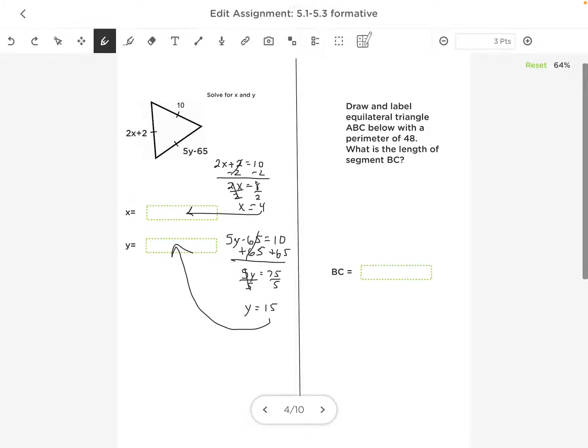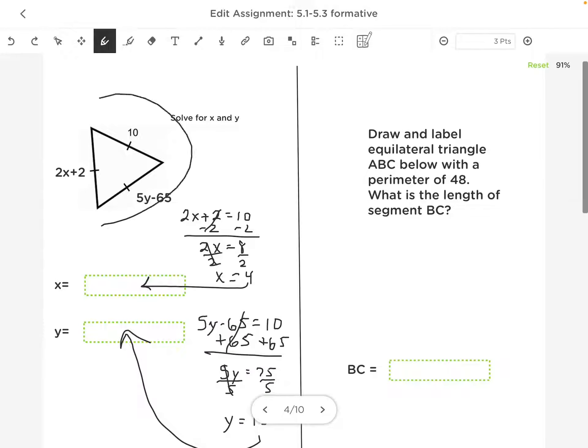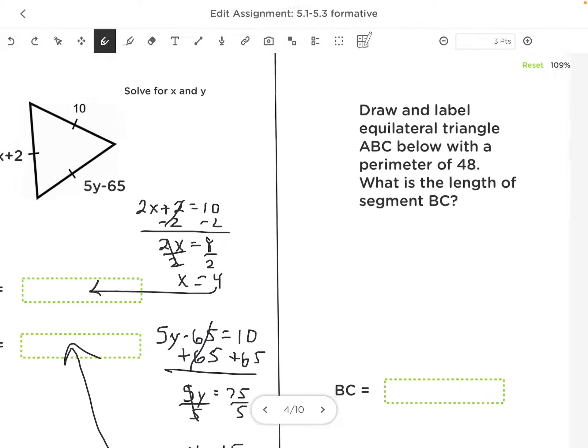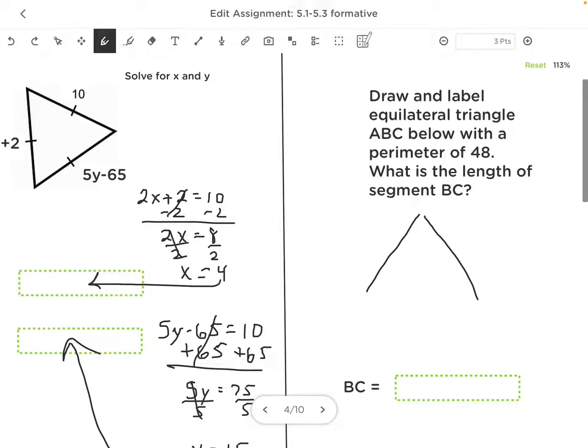Now on the right side, we have to draw and label our own equilateral triangle and label it ABC. So the picture is going to look very similar to this, but I'm going to label the corners or the points triangle ABC. And because it's equilateral, I want to put slashes on each side. I can put one slash or two slashes or however many, as long as it's the same. That indicates that they are all equal or congruent.